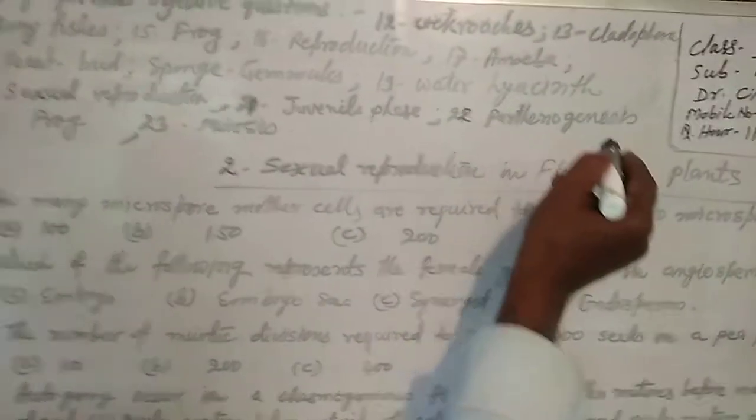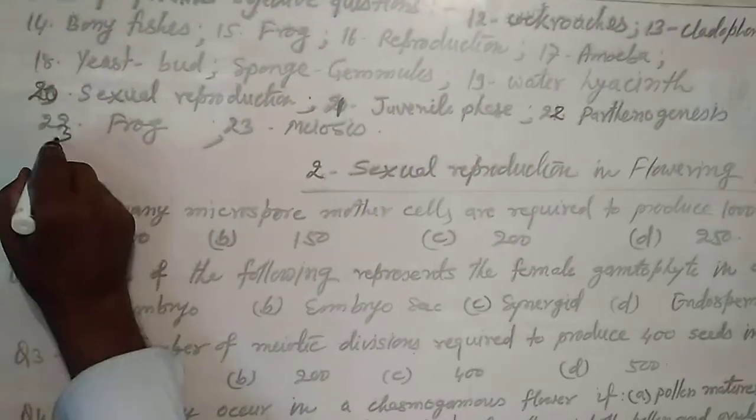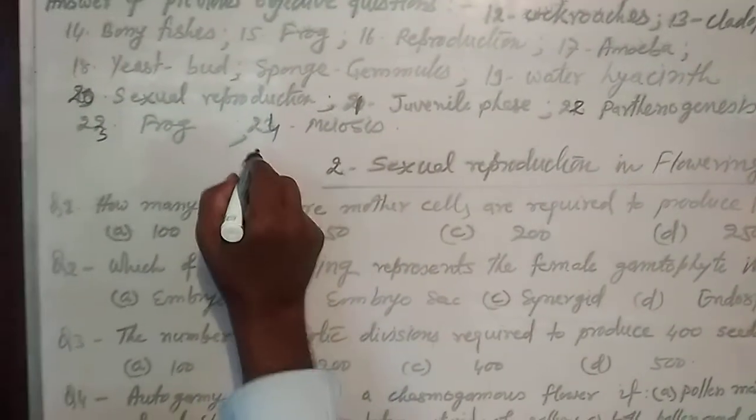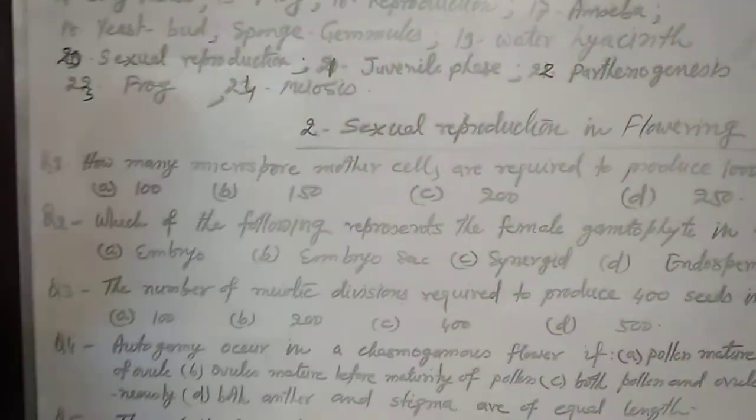Juvenile phase. 22: Parthenogenesis. 23: Probe. 24: Meiosis. Now, second chapter.